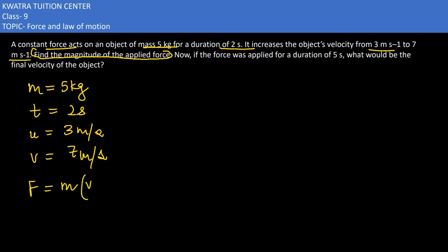m times (v minus u) over t. What is m in this case? 5. What is v? 7. u is 3, t is 2. So you would get 5 into 4 divided by 2.